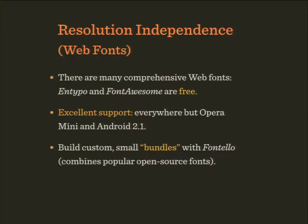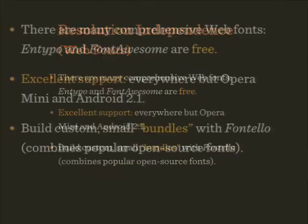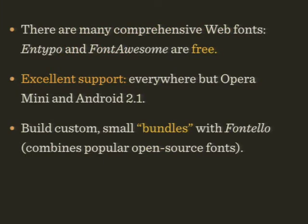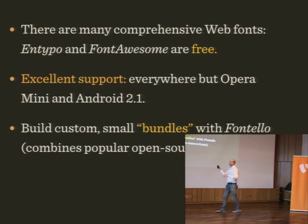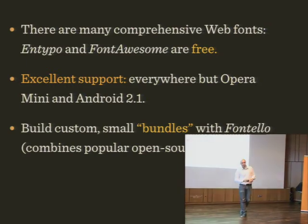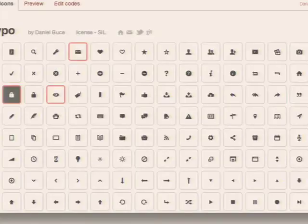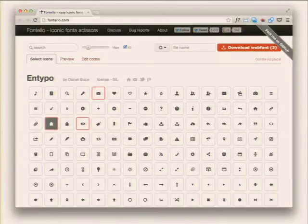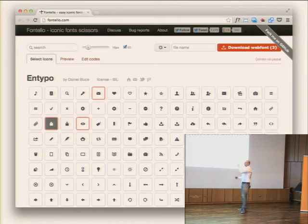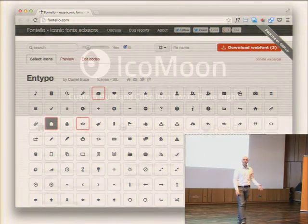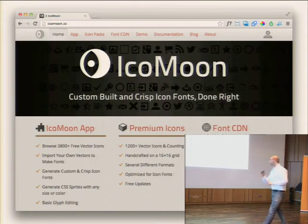There are many comprehensive web fonts available — Font Awesome or IcoMoon, which are massive and have all the icons you probably need. Support is everywhere except Opera Mini and Android 2.1. Support is actually better than for SVG. You can build custom, minimal bundles with Fontello, where you grab only the elements you like from open source fonts and generate everything including the fallback. Or use IcoMoon where you can also draw your own icons.